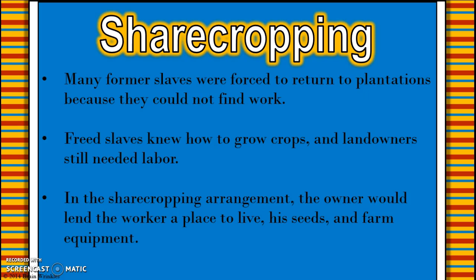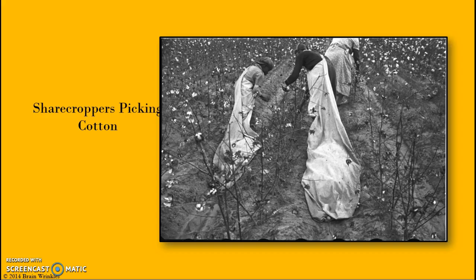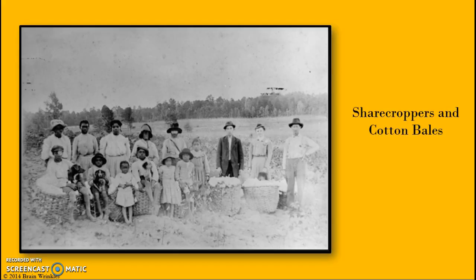Many former slaves were forced to return to the plantations they had been enslaved on to work, because most plantation owners were now broke but still had land they wanted farmed, and the former slaves needed jobs. It was what they knew, and it was difficult to move around the country without money. They knew how to grow crops, and the landowners still needed the labor. In the sharecropping arrangement, the owner would lend the worker a place to live, seeds, and farm equipment. Here you can see sharecroppers picking cotton and their cotton bales.